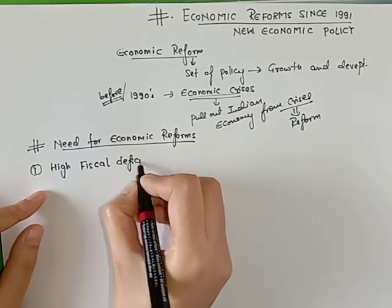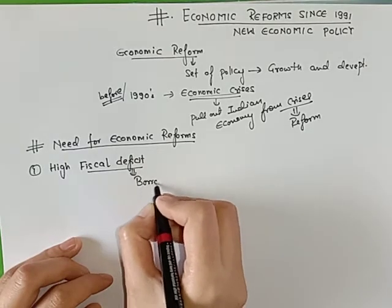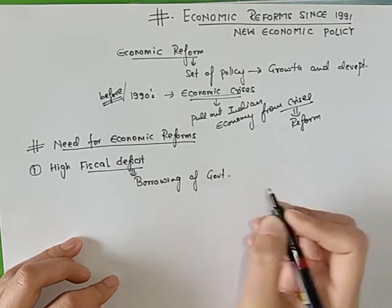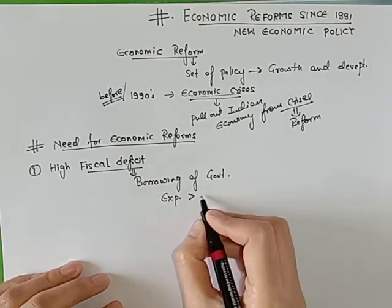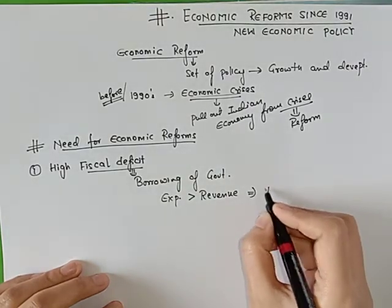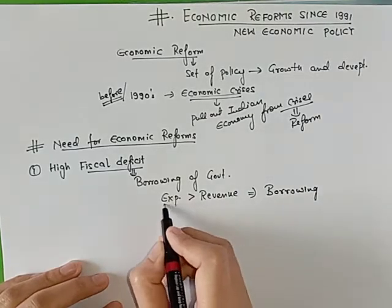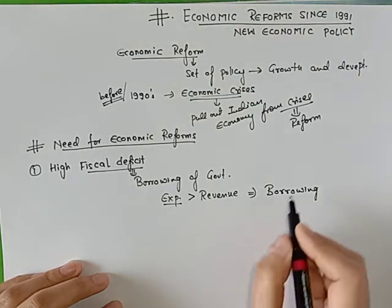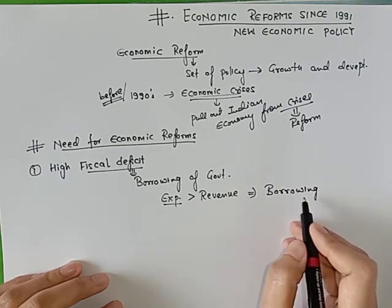What is fiscal deficit? Fiscal deficit is nothing but the borrowings of the government from all sources. Whenever the expenditure of the government is greater than the revenue of the government, that leads to borrowing. Agar aapki jitni income hai usse zyada agar aap spend kar dete hain, to you have to borrow. So the government was borrowing from various areas — from the rest of the world, and from the general public.